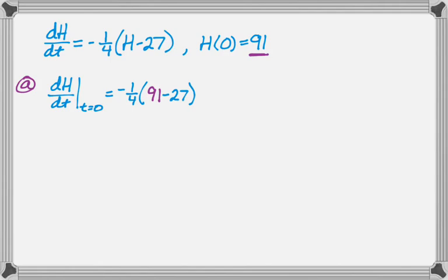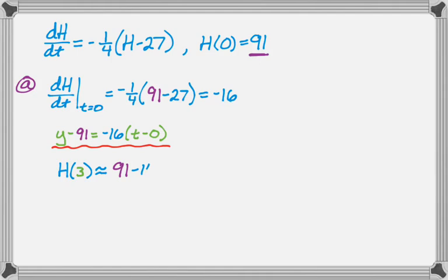91 minus 27 is 64, and negative one-fourth of that is negative 16. So that's the slope, and now we need to write the equation of the line. I'm going to use y as my variable. So it's y minus 91 equals negative 16, which is the slope, and then t minus 0. That's point-slope form, and you can leave it like that. We also have to approximate h when t equals 3. So h(3) is going to be approximately 91 minus 16 times 3, which equals 43 degrees Celsius. That's all we had to do in part A.